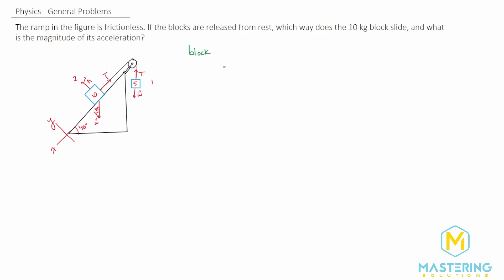Let's start with block one. These pulley problems are very common on physics tests, so pay close attention. Summing forces in the y direction for block one: tension minus weight equals negative mass one times acceleration, since the acceleration is in the negative y direction. Substituting mg for weight: T minus m1·g equals negative m1·a. Solving for tension: T equals m1·g minus m1·a.